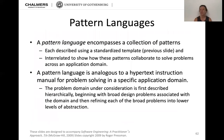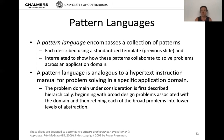Then there is pattern languages. We can have standardized templates and then have a pattern language — a collection of related patterns, each described using that template — interrelated to show how these patterns collaborate to solve problems across a specific application domain. There could be a pattern language for automotive, one for air traffic, one for home automation and robots. A pattern language is analogous to a hypertext instruction for problem solving in a specific application domain. The problem domain is described hierarchically, beginning with broad design problems and then refined into lower levels of abstraction.